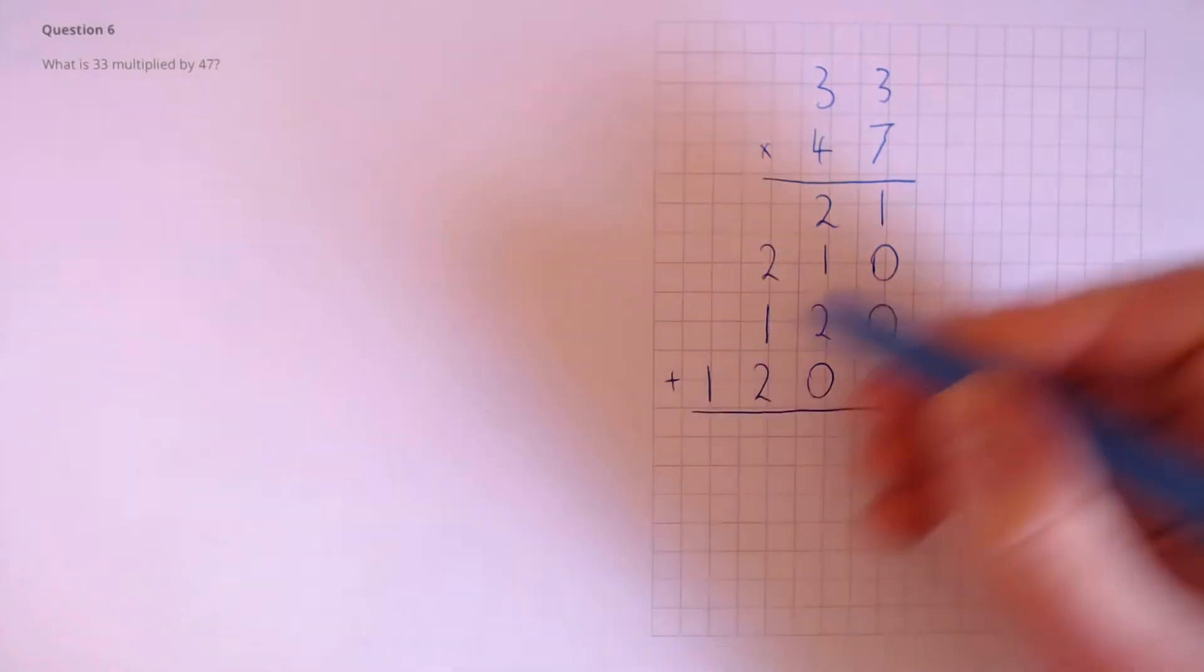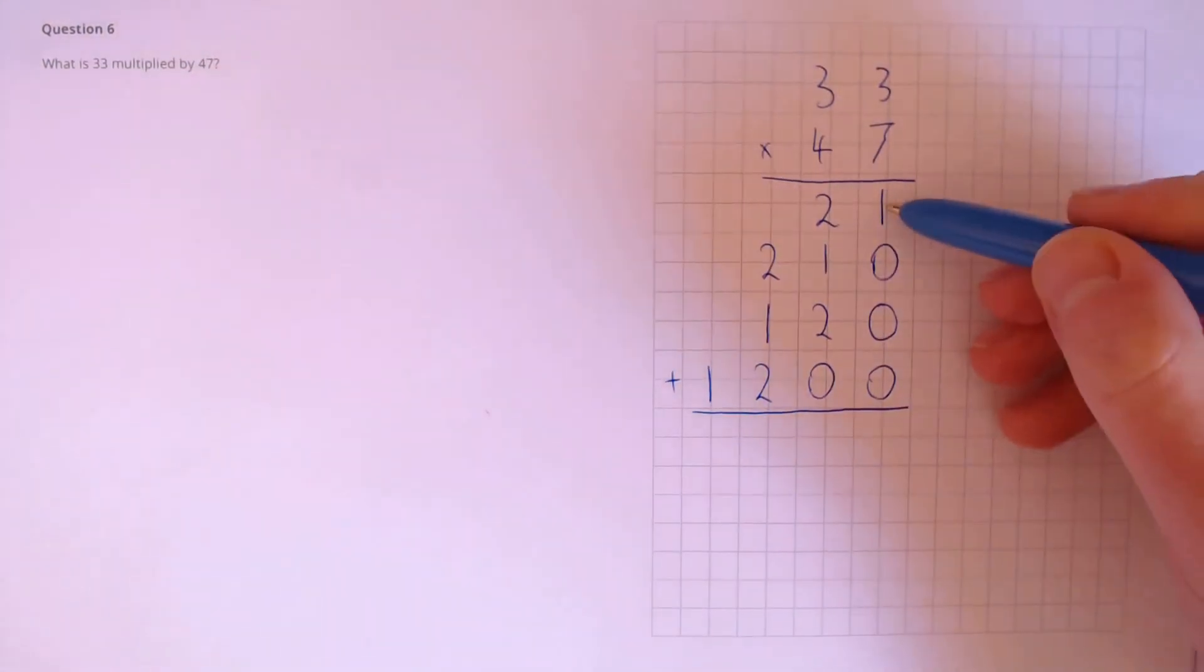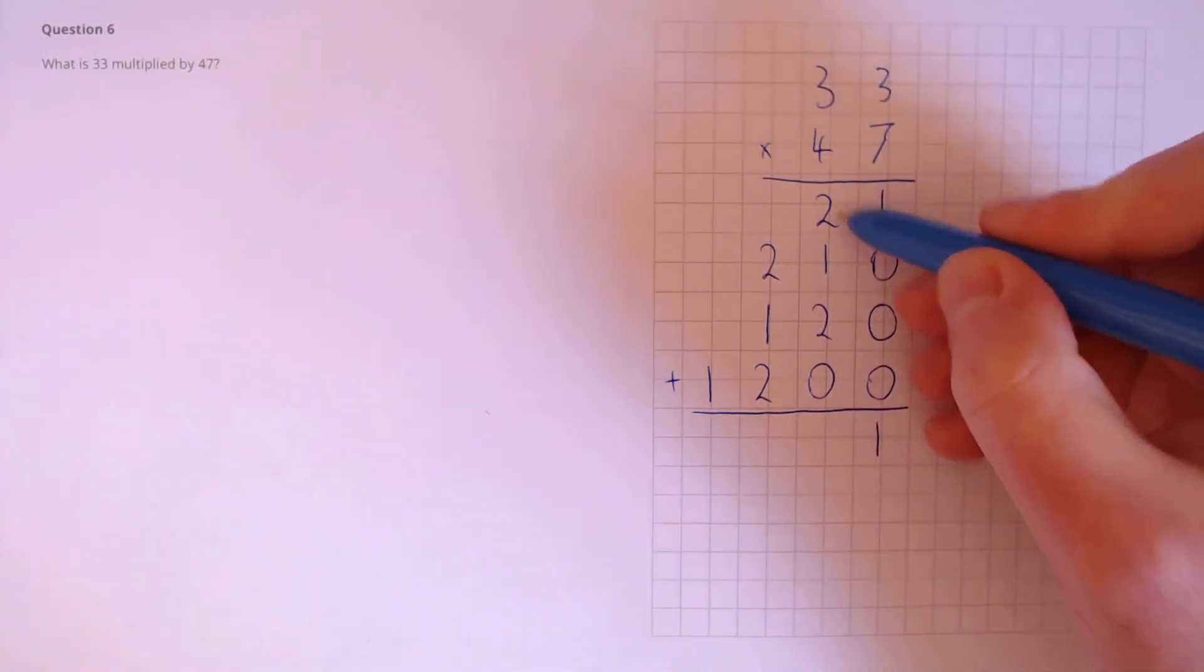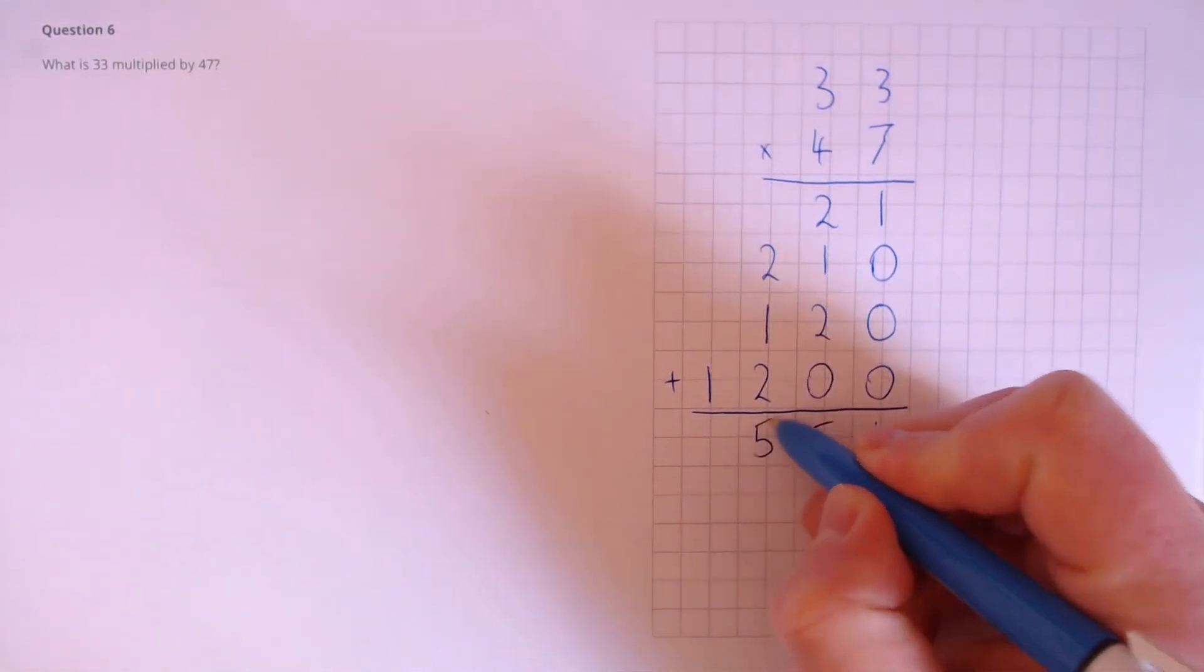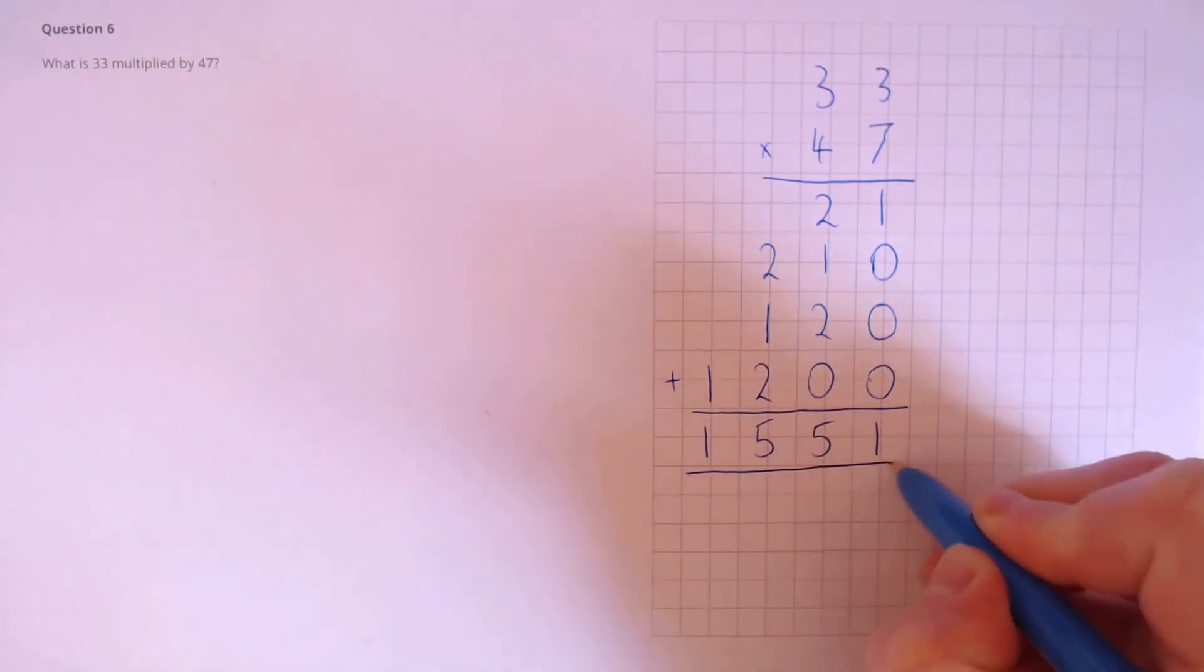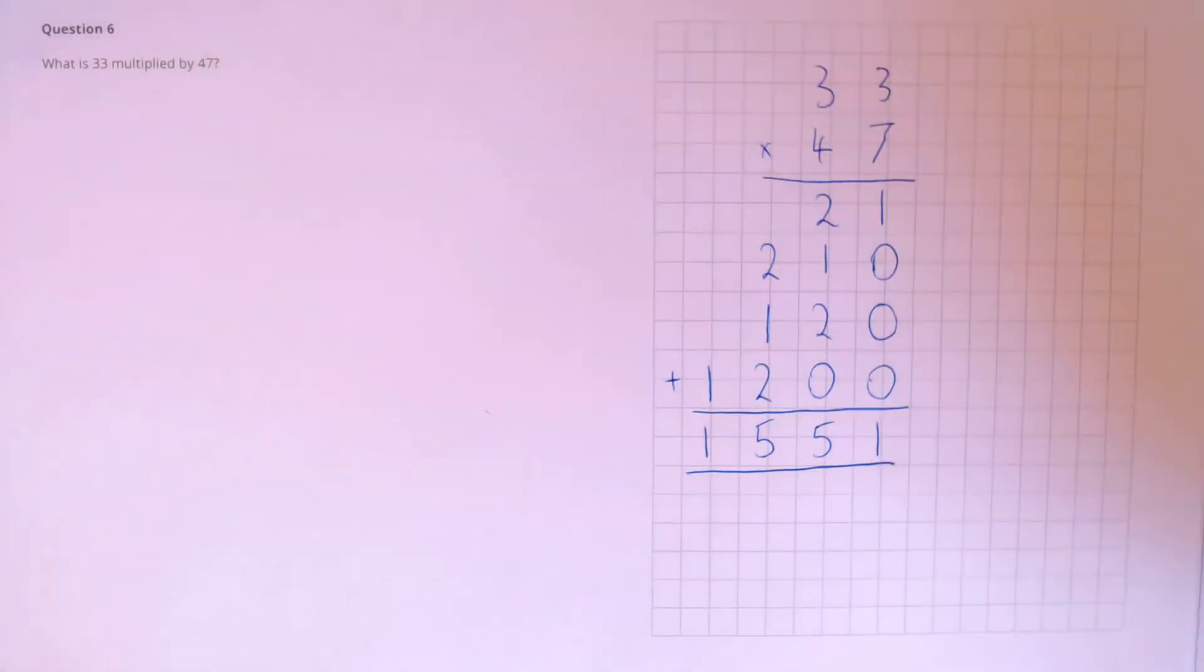Finally, we need to add up these four numbers. So here we've got 1, 2 plus 1 plus 2 is 5, 2 plus 1 plus 2 is 5 again, and 1, giving our answer of 1,551.